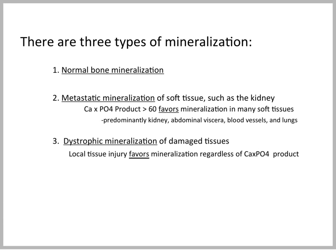There are three types of mineralization. First is normal mineralization within bone. Second is metastatic mineralization of soft tissues, which occurs when hypercalcemia or hyperphosphatemia causes the calcium-phosphate product to become too high, leading to precipitation in the kidney, abdominal viscera, blood vessels, and lungs — potentially causing permanent kidney damage. Third is dystrophic mineralization of injured tissues, which occurs regardless of the calcium-phosphate product.